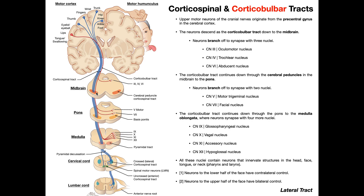The way to think about the corticobulbar tracts as they descend down through the brain stem is like a train with three separate stops. Some of the people get off at the first stop, some get off at the second stop, and others get off at the third stop — those stops being the midbrain, the pons, and the medulla. Some of these upper motor neurons are going to get off at the midbrain, though most are not. They'll descend downward through those cerebral peduncles, but some will get off at the level of the midbrain and synapse with nuclei there.